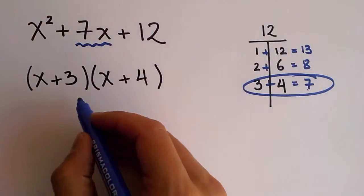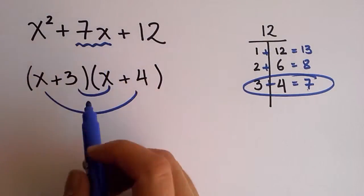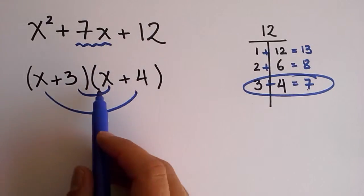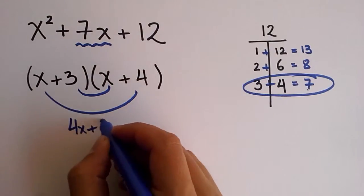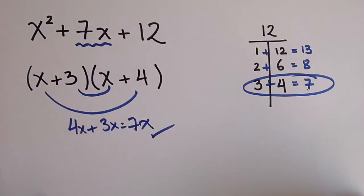Now, why does this work? Pretty much because you know that this term in the middle is the product of the adding of 4x and 3x that are the products of these two. So 4x plus 3x will be giving us 7x. That's why this guy works.